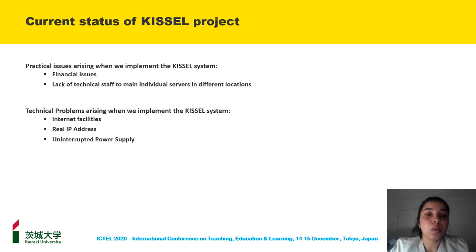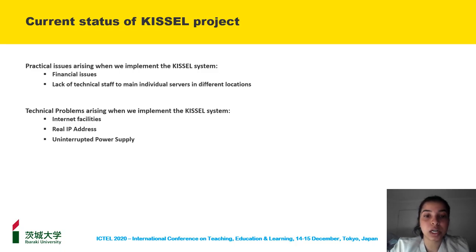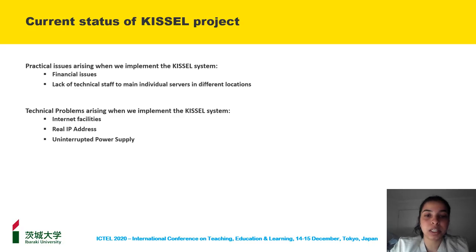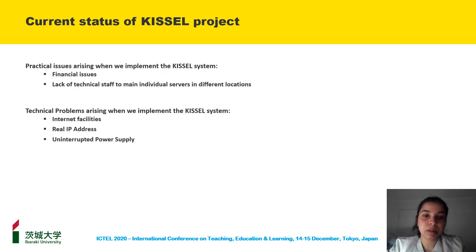Problems arising when implementing the KISEL system: First, internet facilities are not available in most schools in South Asian countries, and we were unable to get attention from countrywide training programs. Second, a real IP address is needed to connect our KISEL server to the internet, and in Sri Lanka and Bangladesh it is very hard to obtain. Third, uninterrupted power supply is needed to keep the server running 24 hours, but in Asian countries it was very hard to keep it running after school hours and on weekends.